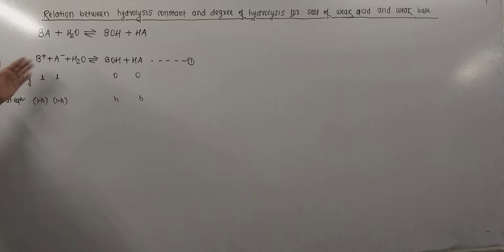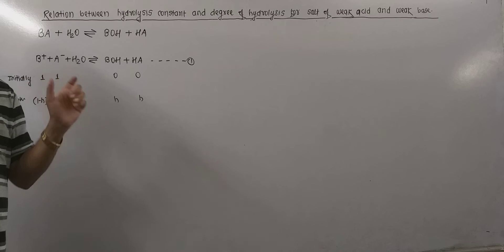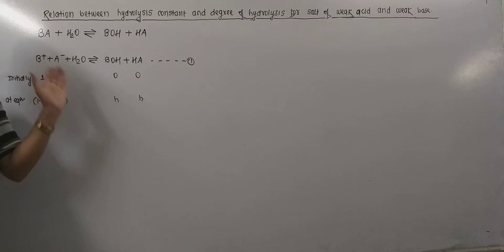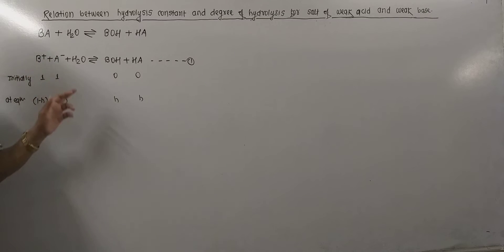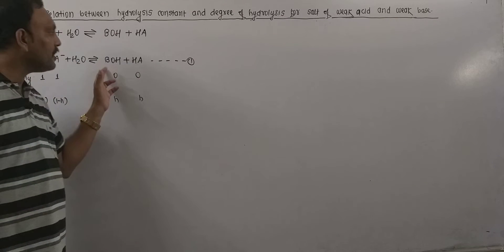So the ionic reaction can be given as follows. The only strong electrolyte in this is salt BA, so it can be given into ions: B+ plus A- plus H2O gives BOH and HA.